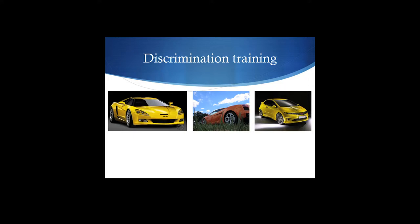The idea is: can you discriminate between those things? Maybe you can, maybe you can't. But we could train you to. To develop stimulus control, the first thing we're going to do is make the discriminative stimulus distinct — make it clear. For a stoplight, you don't put a red light up and a slightly less red light up where one means go and one means stop. You have dramatic differences between those lights. Same thing with these cars — there are dramatic differences between the cars.